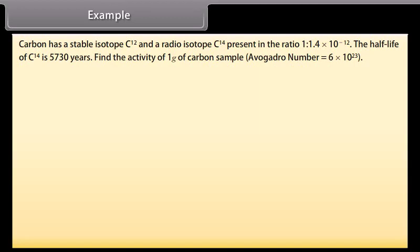Avogadro's number is equal to 6 into 10 raised to the power 23. Solution: The number of atoms in 1 gram carbon is equal to 6 into 10 raised to the power 23 whole by 12, which is equal to 5 into 10 raised to the power 22.